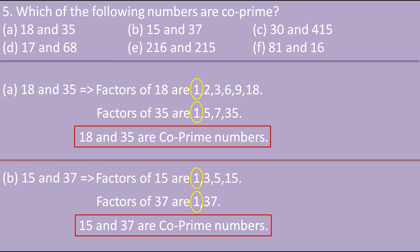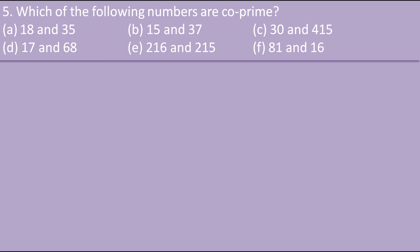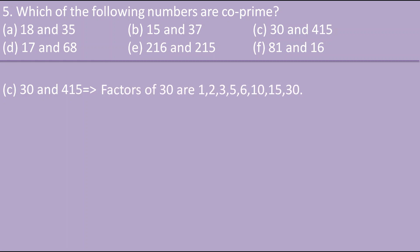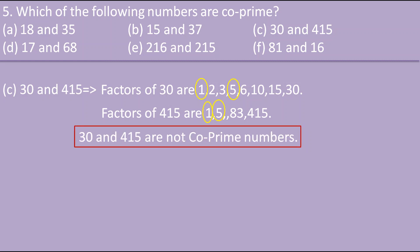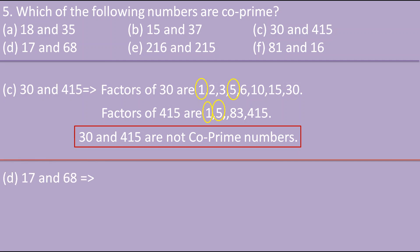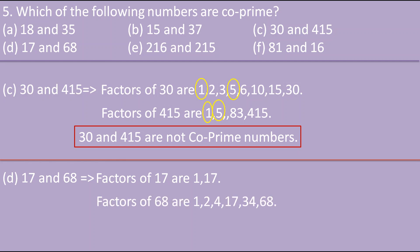For 30 and 415: factors of 30 are 1, 2, 3, 5, 6, 10, 15 and 30; factors of 415 are 1, 5, 83 and 415. Both 1 and 5 are common, so these two numbers are not co-prime. For 17 and 68: factors of 17 are 1 and 17 (17 is prime); factors of 68 are 1, 2, 4, 17, 34 and 68. Both 1 and 17 are common, so 17 and 68 are not co-prime numbers.